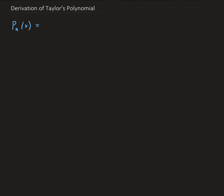To start out with this derivation, we want to start with a general polynomial. It's going to be a degree N polynomial with this form: a0, which is just a constant, plus a1 times (x minus c), plus a2 times (x minus c) squared, plus a3 times (x minus c) to the third power, and so on. This is a general form that allows for shifting as well.